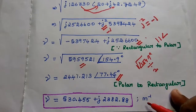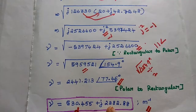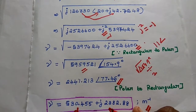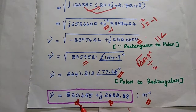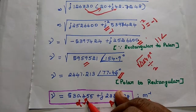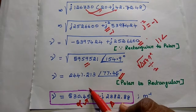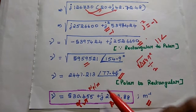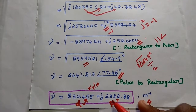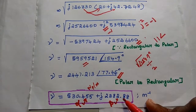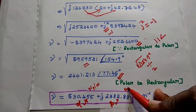Now we have obtained the propagation constant: gamma is equal to 530.455 plus j2382.88 meter power minus 1. From this, the attenuation constant alpha equals the real term, 530.455, with unit neper per meter. The phase shift constant beta equals the imaginary term, 2382.88, with unit radian per meter.